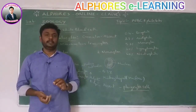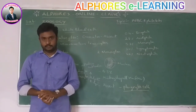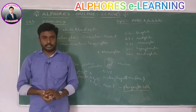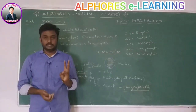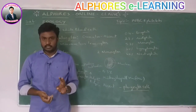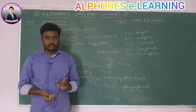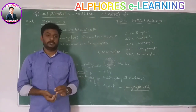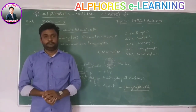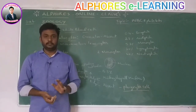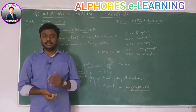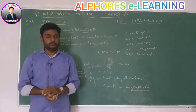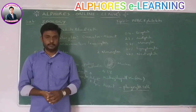The differences between granulocytes and agranulocytes are most important. Key points include percentage, shape of nucleus (lobed or simple, and how many lobes), and functions of each WBC type. Blood as a fluid connective tissue is now completed. The next topic is lymph, which is also a type of fluid connective tissue, to be discussed in the next class. Thank you.